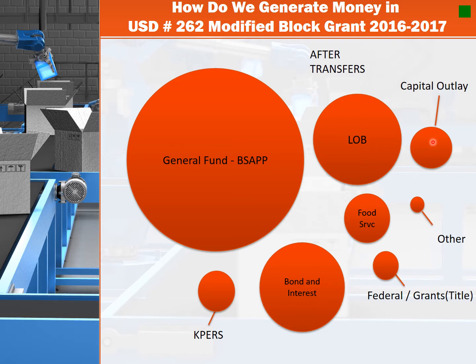Food service is exactly that — the funding needed and the flow-through funding to provide meals. Other may be grants as well as facility use fees. Then we receive federal grants such as Title I to help those students that may need additional assistance. Bond and interest is the fund that goes in and out to fund our current bond and interest payments — this does include the 2016 bond. And CAPERS is a flow-through from the state as well as local sources to provide funding for retirement for all of our staff who qualify.